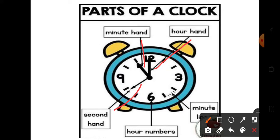The big numbers — like six o'clock, three o'clock, two o'clock, five o'clock — indicate hours. The small lines in between two numbers are minute lines, which indicate how many minutes have passed. This is just a revision of what we have already done in EVS.